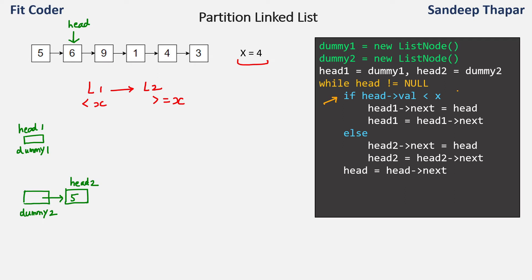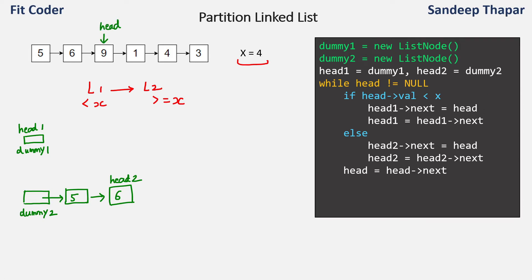We then traverse the linked list from head. In the first iteration, we check if 5 is less than 4 — this is false, so we go to the else part and set head2.next to head (node 5), then move head2 to node 5 and head to node 6. Next, 6 is not less than 4, so next of node 5 becomes 6, head2 moves to 6, and head moves to 9. Again, 9 is not less than 4, so next of node 6 becomes 9, head2 moves to 9, and head moves to node 1.